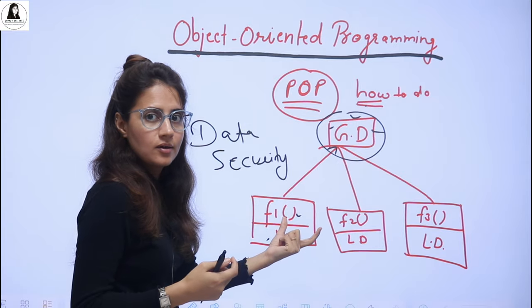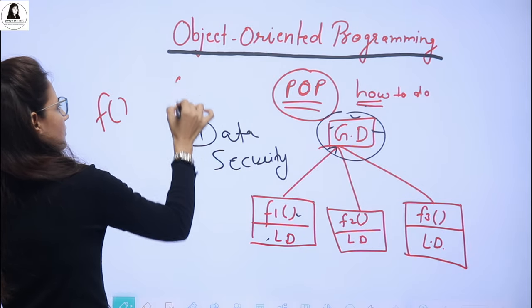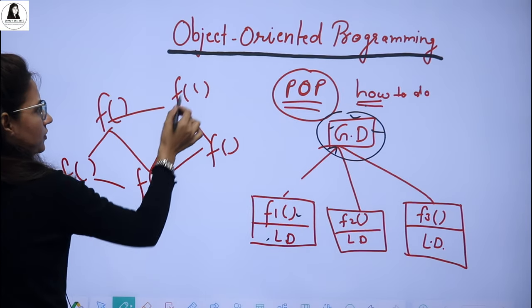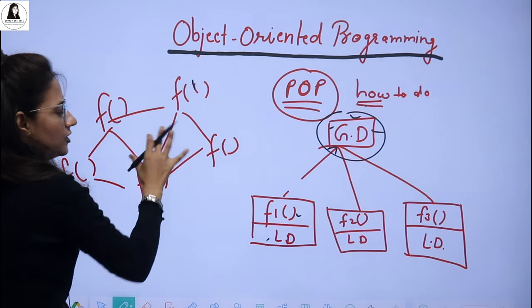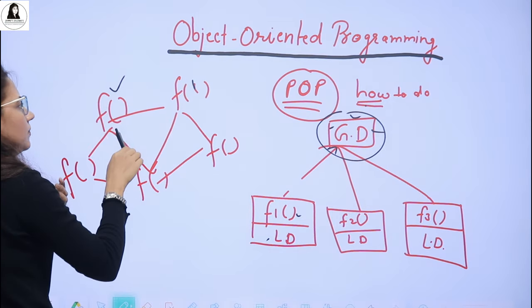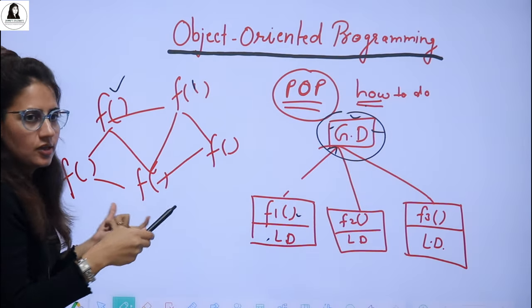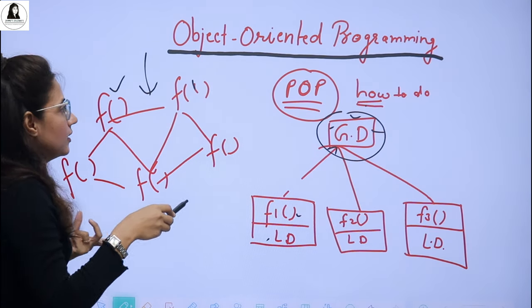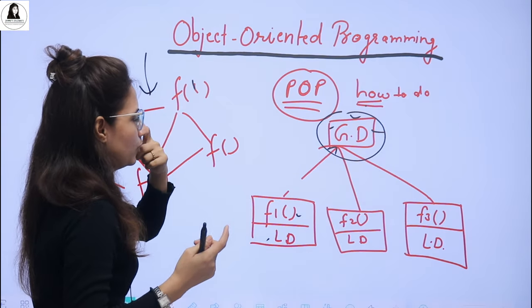Because in POP there is less data security, and there are so many functions that are interrelated with each other. This function calls this function, this function calls that function — there is a lot of interdependency. So if you want to change one function, you may have to change other functions too, or it will affect them as well. If you want to add more functions, that would be difficult too.